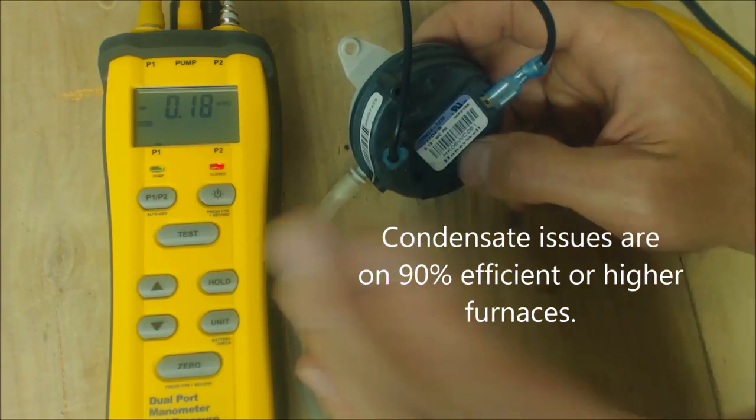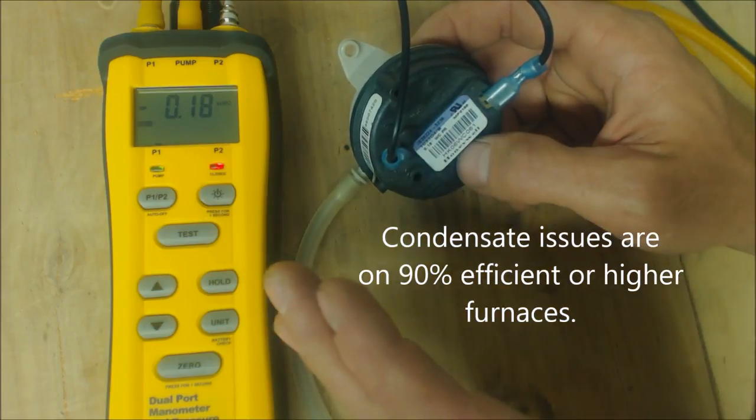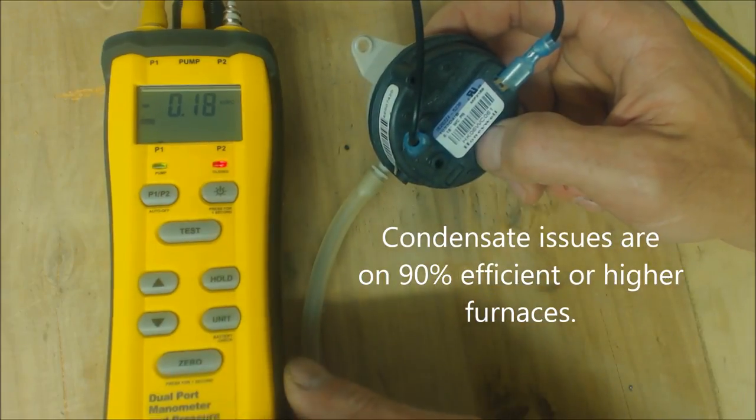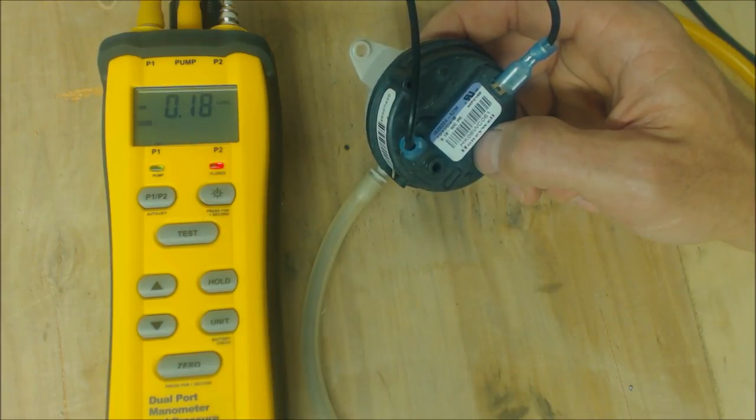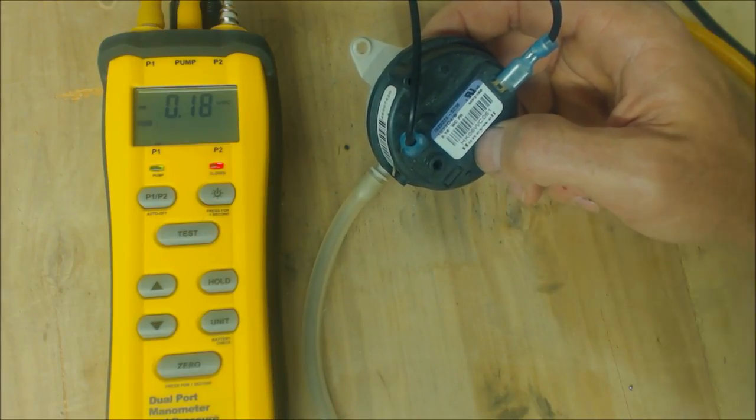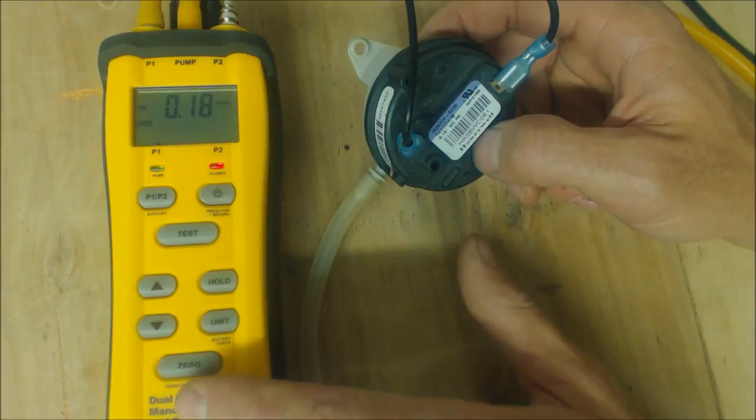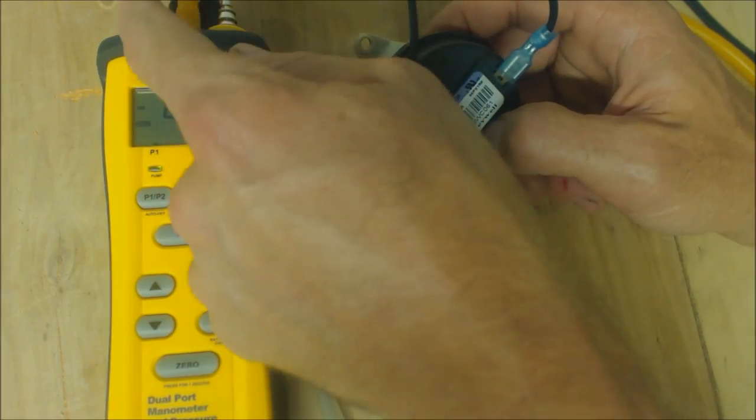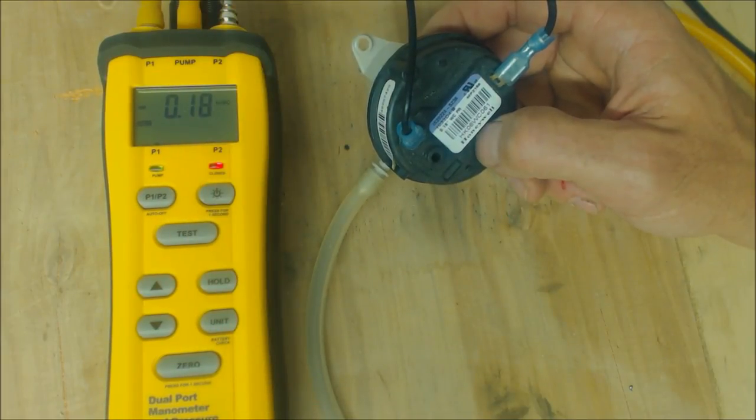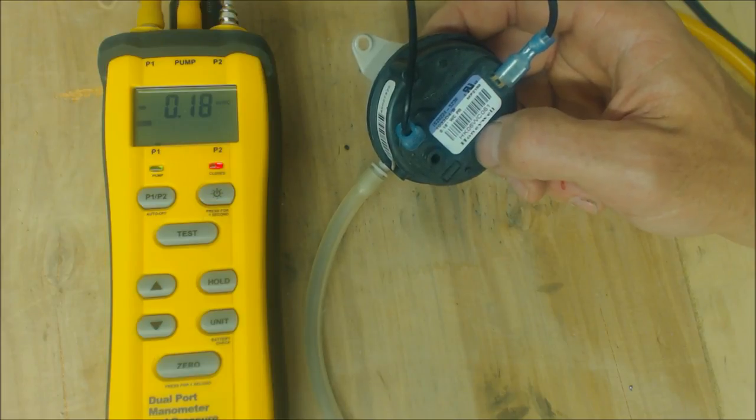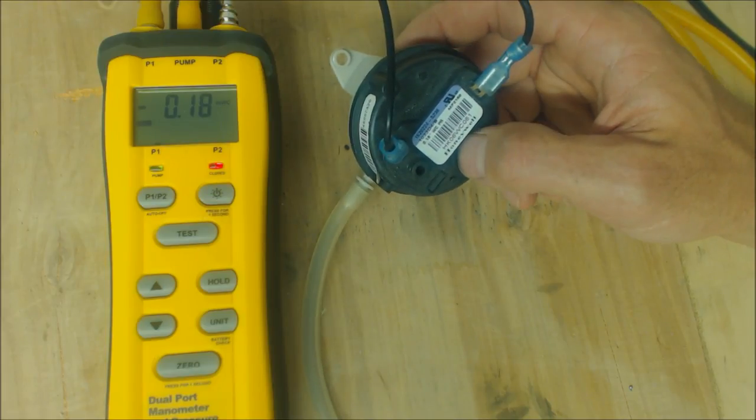Something along that line is typically an intermittent problem with a pressure switch. But a good accurate pressure tester will really help you with that. This also does dual port as well, so you can take a pressure differential across the furnace or the coil like we were saying earlier.